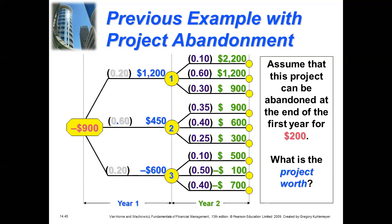We need to decide on the $200 threshold. Looking at the cash flows on the tree: $1200, $2200, $1200, $900, $450, $900, $600, $300. The expected return calculated would be greater than $200 because all six cash flows in the upper branches are positive — they are cash inflows. However, in the third branch, the first year produces negative cash flows and the future cash flows are also negative — two negative and one positive.